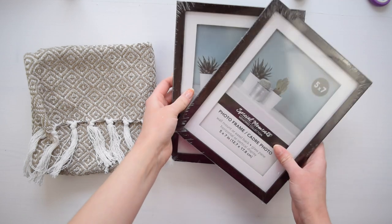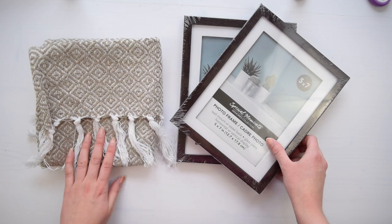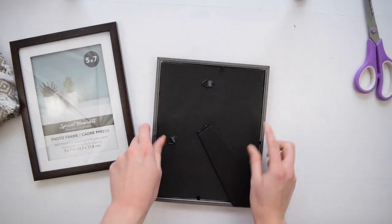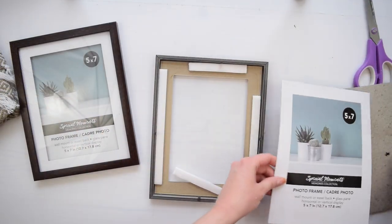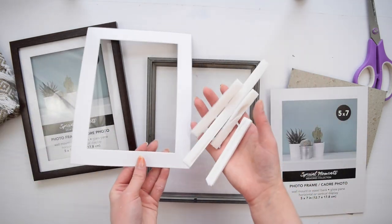Next let's use some Dollar Tree items to make some textured wall art inspired by the two images you see on the screen. Now I specifically love these five by seven Dollar Tree frames because they're made to have a little extra depth in them. You can see by these little foam pieces I'm removing right here.